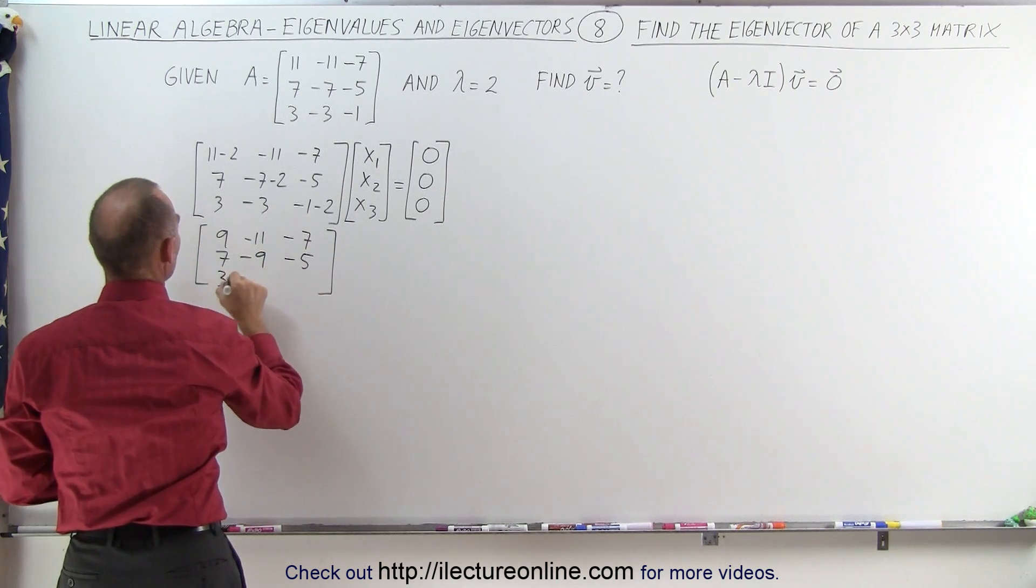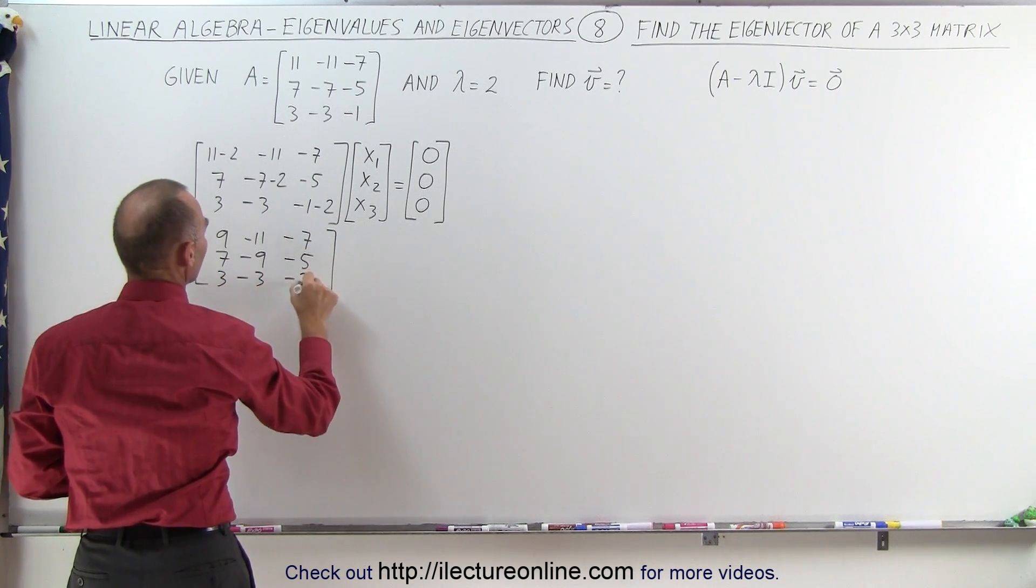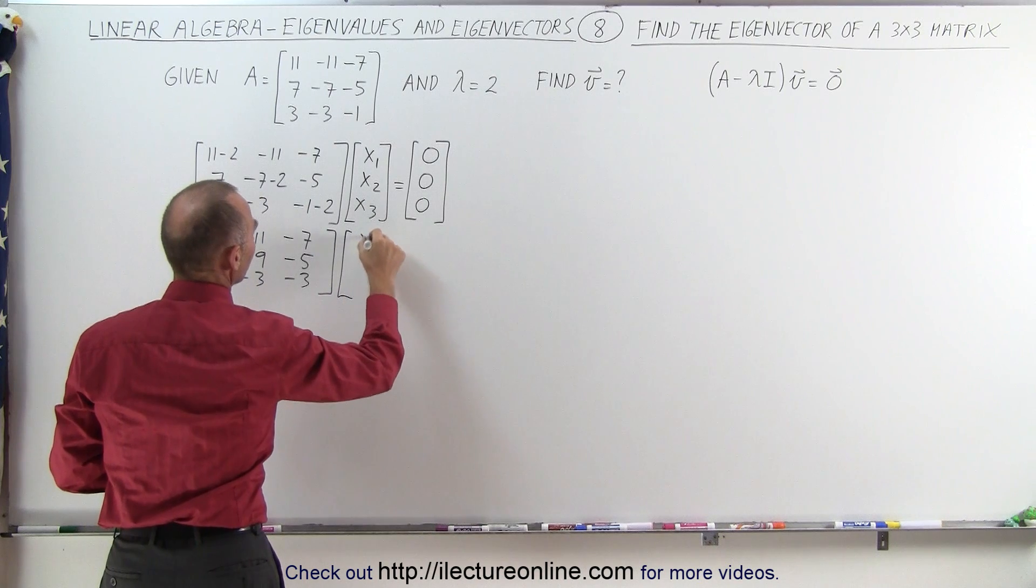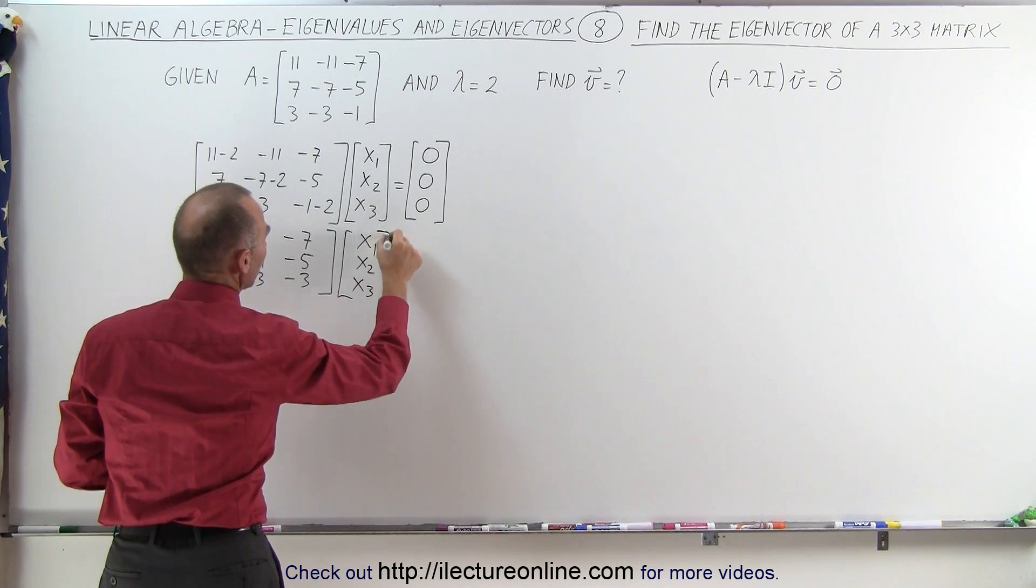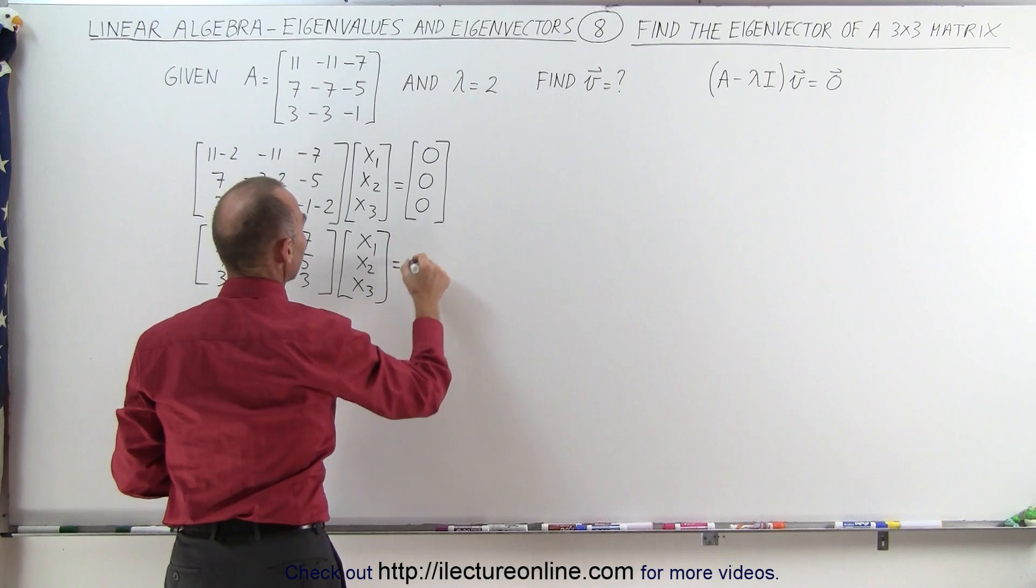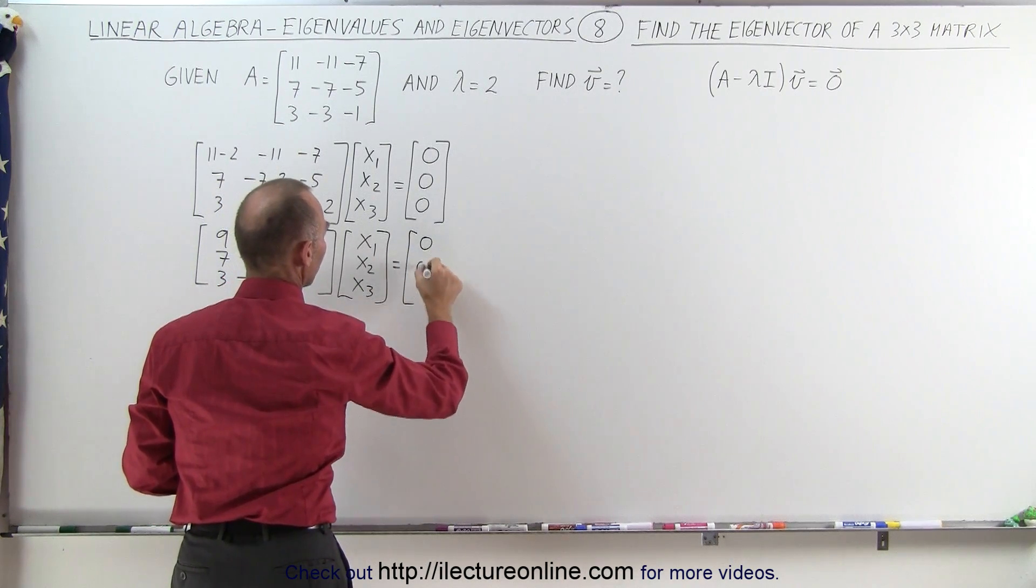and a minus 5, a 3, a minus 3 and a minus 3. So we multiply times X1, X2, X3, the three generalized variables and that equals 0, 0, 0.